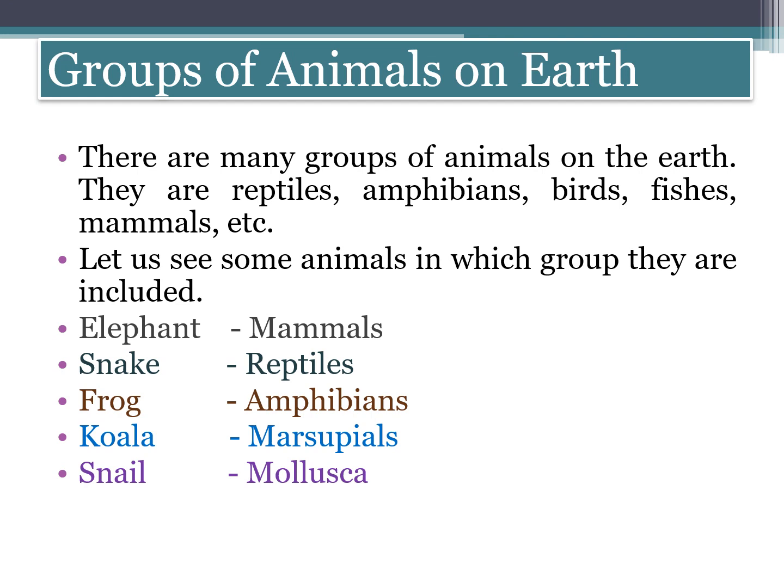Now we are going to learn groups of animals on earth. There are many groups of animals on the earth. They are reptiles, amphibians, birds, fishes, mammals, etc. Let us see some animals and which group they are included in.